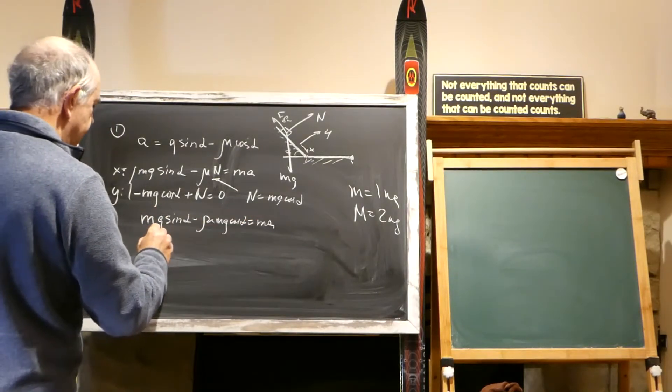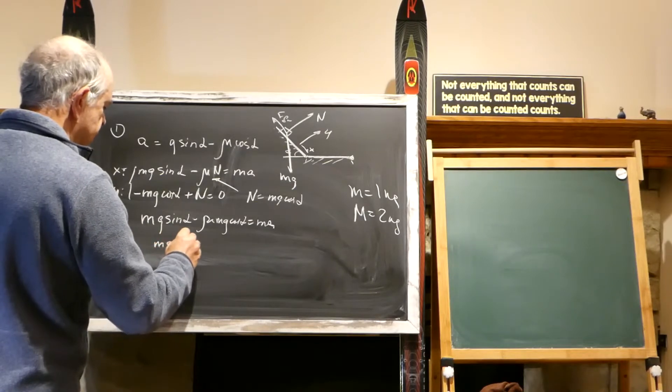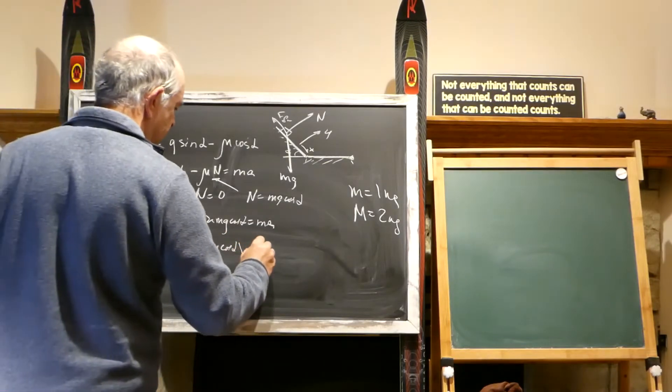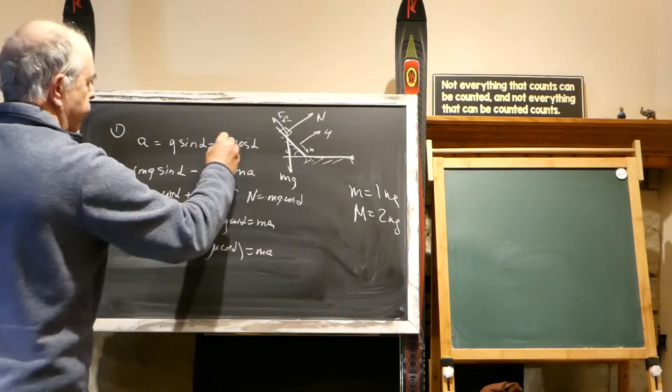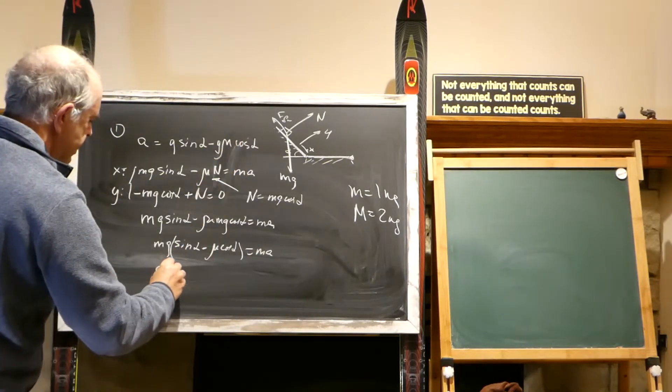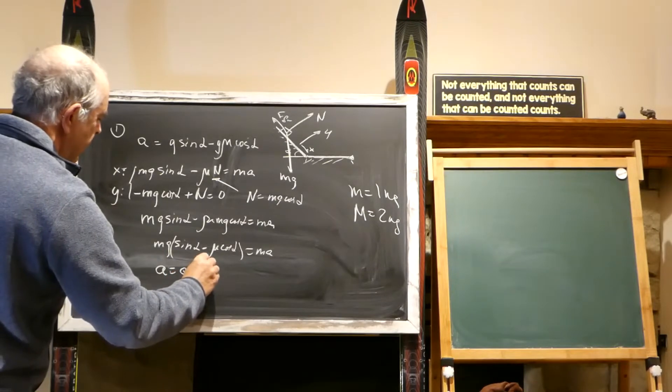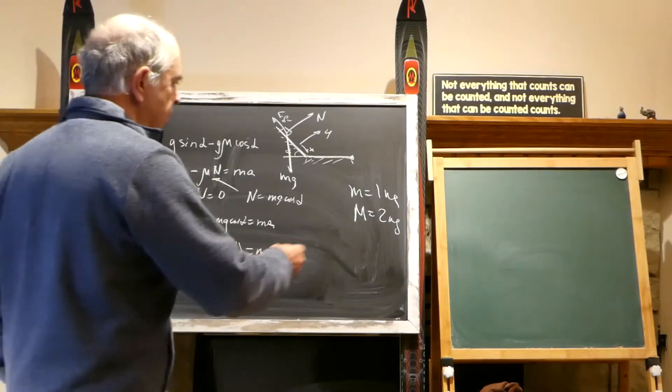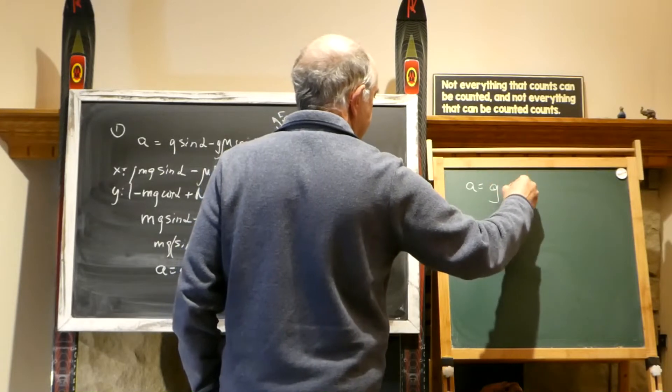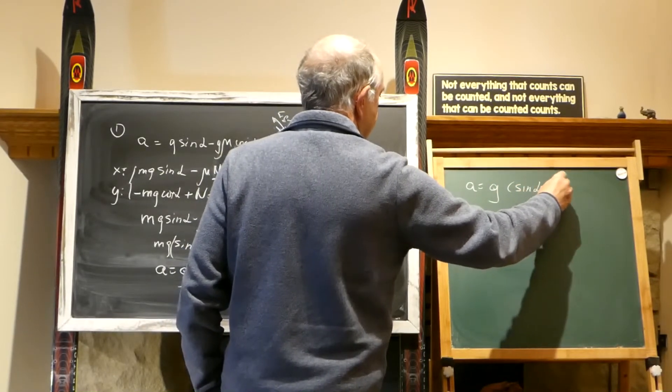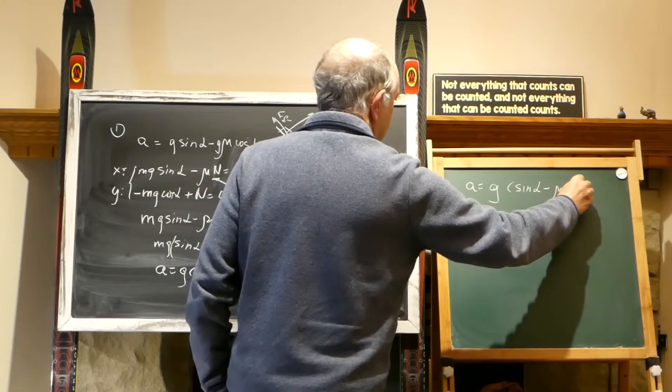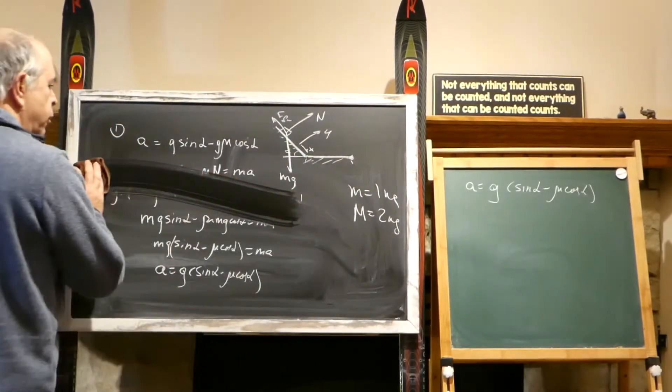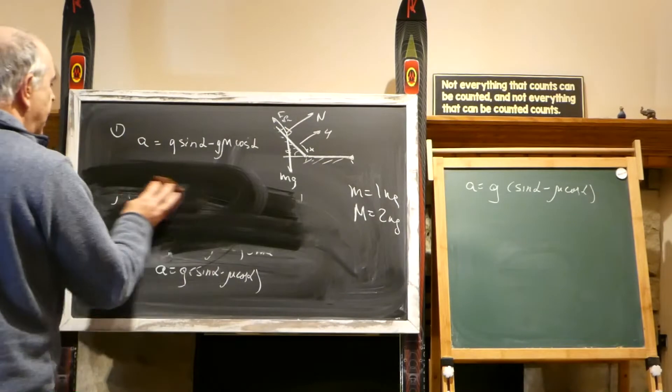M G is factored out, we have M G times sine alpha minus mu cosine alpha, and we have A equals G sine alpha minus mu cosine alpha. And what's important here in this formula is that there is no mass, mass is cancelled out.